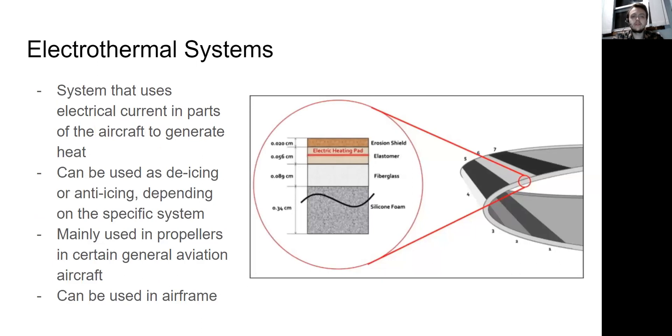So electrothermal systems are systems that use electrical current in parts of the aircraft to generate heat. As you can see here, this is the leading edge of a wing and it has an electric heating pad and a wire that goes into it to activate the heat. They can be used both as de-icing or anti-icing depending on the specific system. They're mainly used in propellers in certain general aviation aircraft. You won't really find general aviation aircraft having electrothermal systems in their aerodynamic surfaces, but they can be used in the airframe itself. It's more of a good way to prevent ice from building up versus actually de-icing because the way these systems work is sometimes they will alternate current so that they're not drawing as much power.